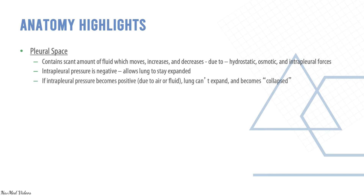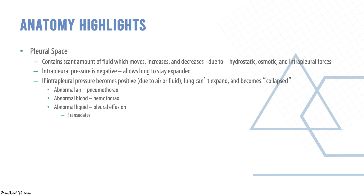The interpleural pressure is normally negative, which allows the lungs to stay expanded. If it becomes positive — due to air or fluid as in pneumothorax, hydropneumothorax, hydrothorax, or hemothorax — the lungs cannot expand and they collapse. Abnormal air in this space is pneumothorax, abnormal blood is hemothorax, and abnormal liquid is pleural effusion, which can be transudate (non-infective, as in ascites or liver failure) or exudate (the infected version).